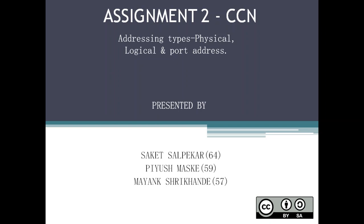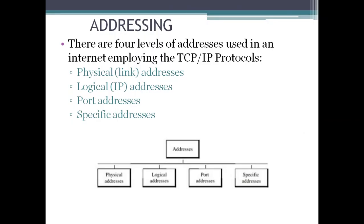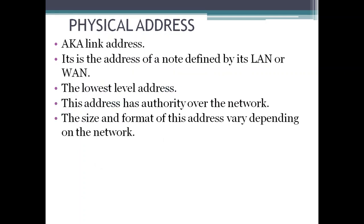Here we are again with our second video on addressing types. This is Saket, Priyush, and Mayang. There are four levels of addresses used in an internet employing the TCP/IP protocols: first is the physical or link address, second is logical or IP address, third is port address, and fourth is specific address. We will see the first addressing type, which is physical address.